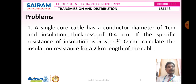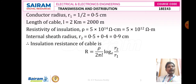The resistivity of the conductor, that is the specific resistance, is 5 × 10^14 ohm-centimeter. Converting to ohm-meters, we multiply by 10^-2, giving 5 × 10^12 ohm-meter. Now we need to calculate one more radius, that is the insulation radius.